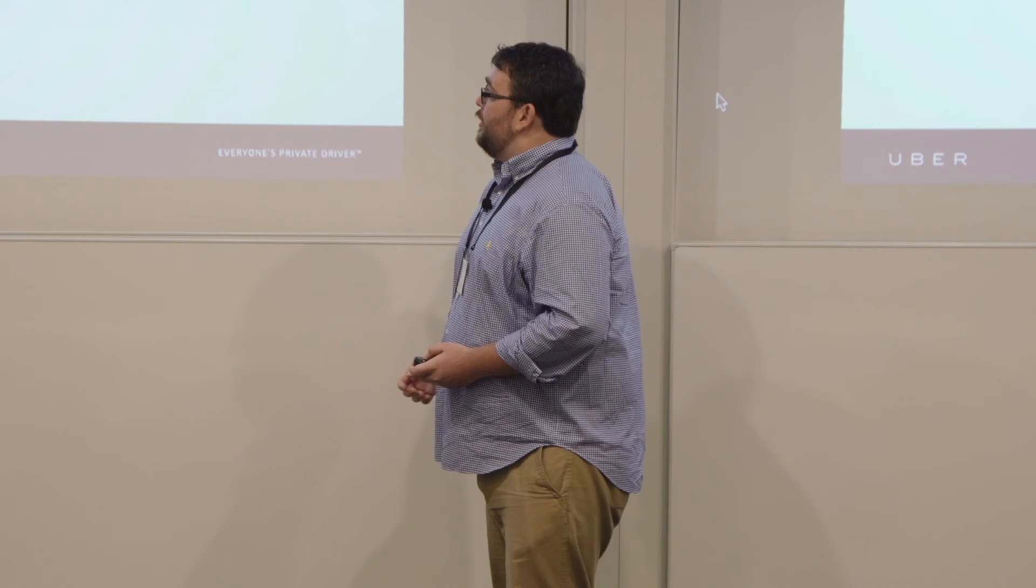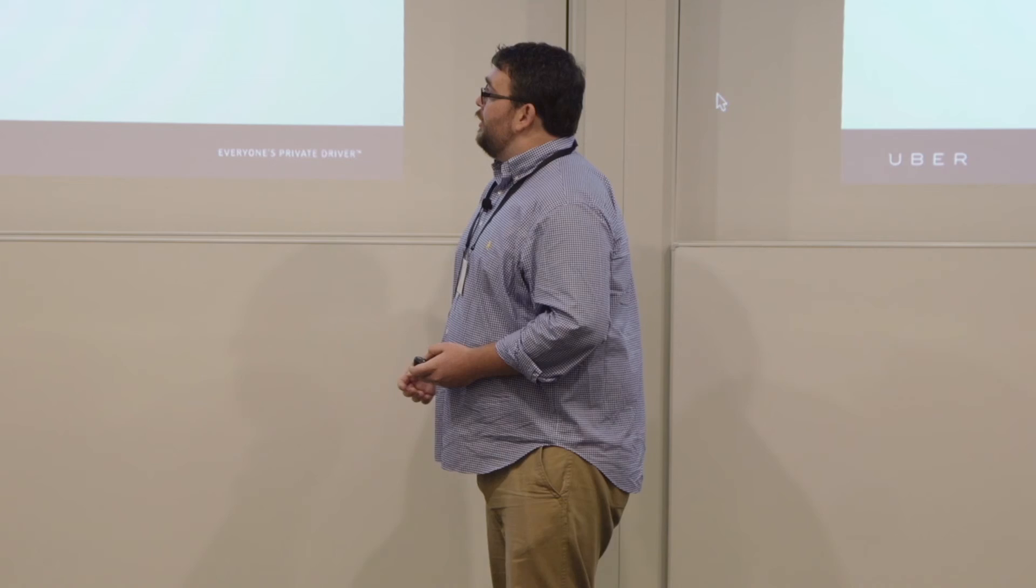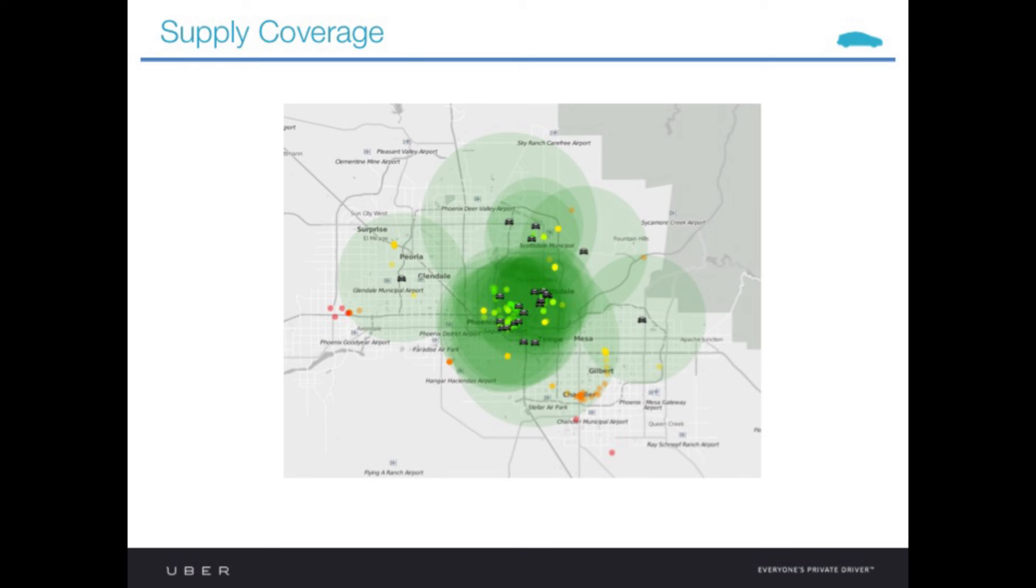This is another way we look at supply coverage. Essentially all these circular maps are regions that a car could be dispatched to. You can just look at the overlap of all these various regions as a good way of measuring reliability and supply. I'm going to stop there. Thank you.